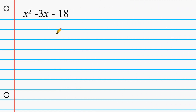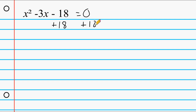Let's try another example. The first thing to remember is to check that the a value equals 1, which it is in this case. Then we set the equation equal to 0. Next, take the c value — negative 18 — and move it to the right-hand side by writing its inverse on the left and the same value on the right. We rewrite the equation as x² − 3x = 18, leaving a blank space on the left because we'll be writing something there shortly.